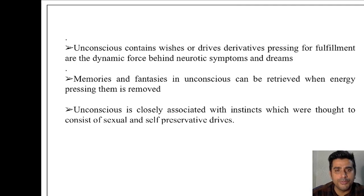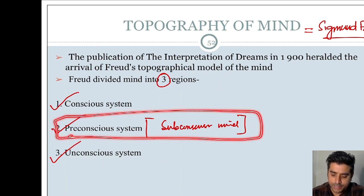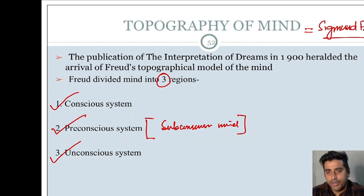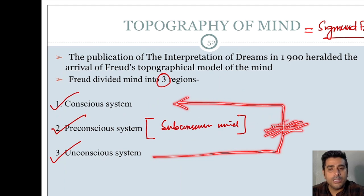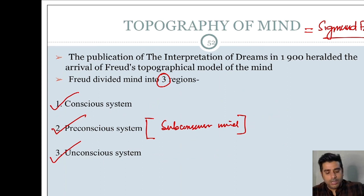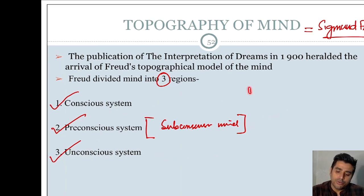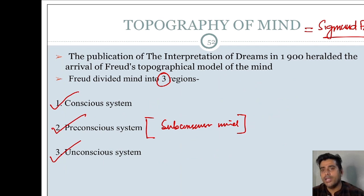This is all about the Topography of the Mind. Our mind has three important levels: Conscious, Preconscious, and Unconscious. The Preconscious system is also called the Subconscious level, where information can be brought back to the Conscious level without much effort. Unconscious content can enter the Conscious level when the Preconscious becomes weak, such as during dreams. If Unconscious thoughts reach the Conscious mind, they express as a neurotic disorder — such as Conversion Disorder. Thank you.